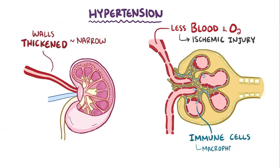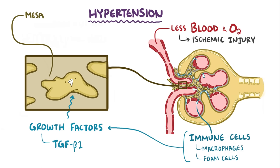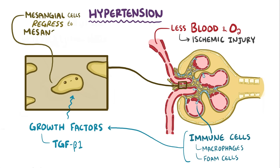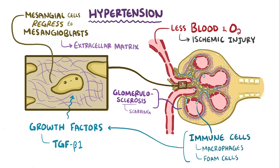Immune cells like macrophages and fat-laden macrophages called foam cells slip into the damaged glomerulus and start secreting growth factors like transforming growth factor beta-1, or TGF-beta-1. These growth factors cause the mesangial cells to regress back to their more immature stem cell state known as mesangioblasts, and then those mesangioblasts secrete extracellular structural matrix. This excessive extracellular matrix leads to glomerulosclerosis, which is hardening and scarring, which diminishes the nephron's ability to filter the blood, and over time this leads to chronic kidney disease.